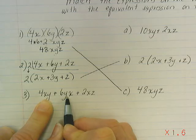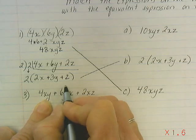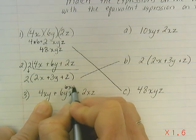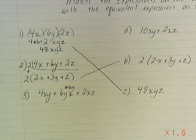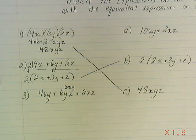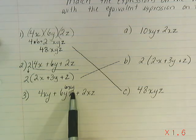The variables are the same, so I can rewrite this 6yx and just switch the order to 6xy. They're all being multiplied together, so I can multiply them in any order. That's the commutative property, which allows me to switch this order.